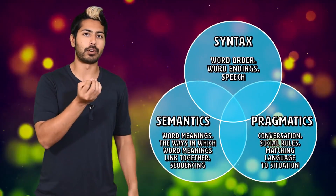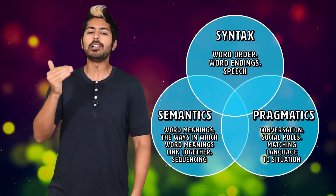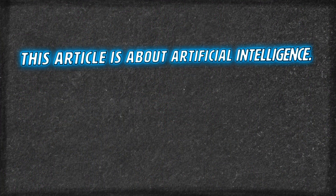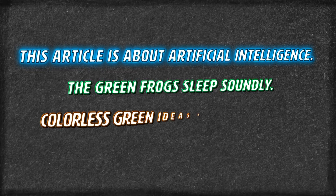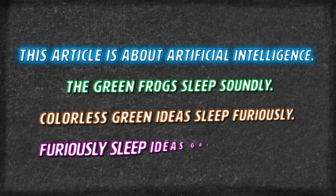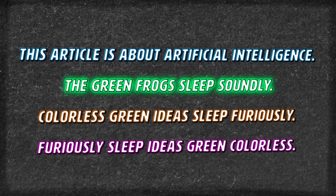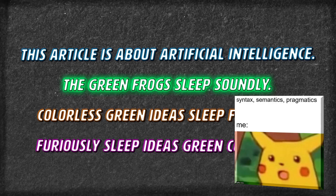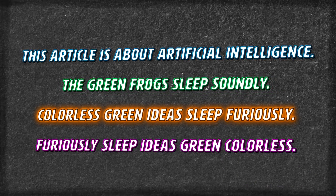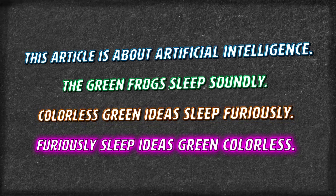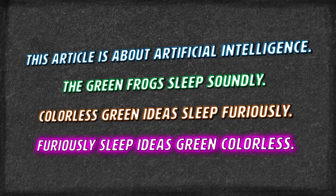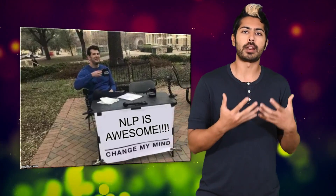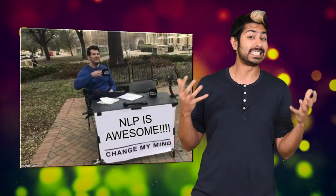To understand the difference between these three criteria, take a look at the following four sentences. The first sentence is appropriate at the start of an article — it's syntactically, semantically, and pragmatically correct. The second sentence is syntactically and semantically correct, but pragmatically sounds kind of whack. The third sentence is syntactically correct but semantically incorrect. And the last sentence is incorrect on all three fronts: syntactically, semantically, and pragmatically.